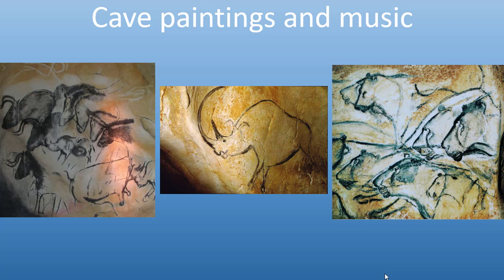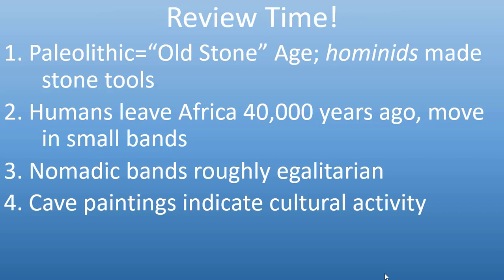Although we can't be 100% sure of the purpose of cave paintings like these, theories range from spiritual uses to simply wanting to portray the world around them. To review the main points: the Paleolithic Age refers to the Old Stone Age when tool-making hominids used stone to make tools. Around 40,000 years ago, anatomically modern humans left Africa, existing in small nomadic bands of usually fewer than 100 members. We believe these bands were generally egalitarian, and we have evidence of cultural activity such as the 35,000-year-old paintings in Chauvet Cave in France.